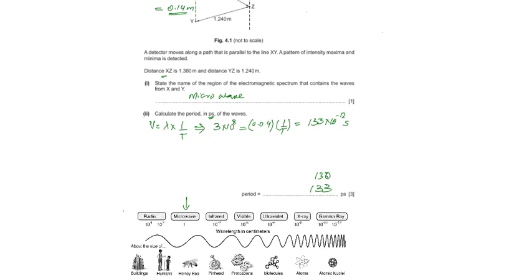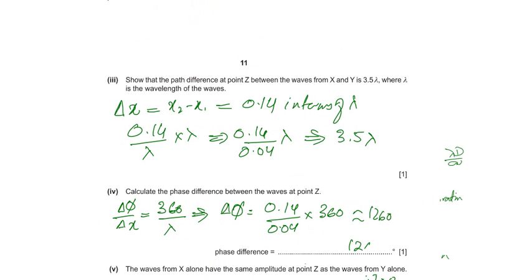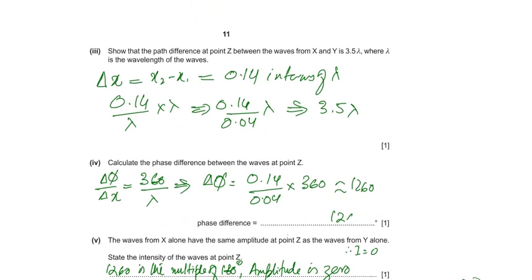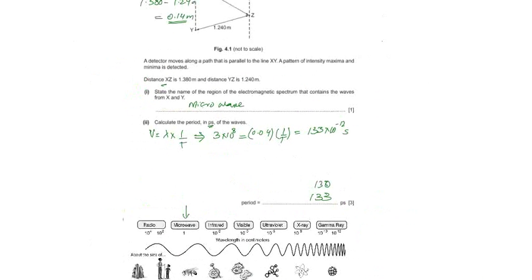Show that the path difference at point Z between the waves from X and Y is 3.5 lambda, where lambda is the wavelength of the wave. The path difference is X2 minus X1, which is 1.38 minus 1.24, which is 0.14.